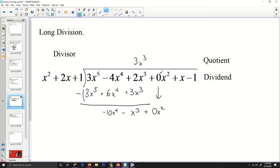3x squared times 2x is going to be 6x to the 4th, and then 3x to the 3rd times 1 is 3x to the 3rd. We are going to subtract that whole expression right there. 3x to the 5th minus 3x to the 5th is 0 and that's important. Negative 4x to the 4th minus 6x to the 4th is negative 10x to the 4th. Then 2x to the 3rd minus 3x to the 3rd is negative x to the 3rd, and we're going to bring down this 0x squared.